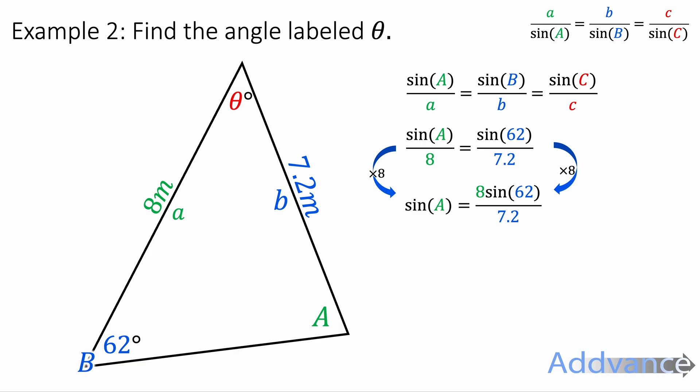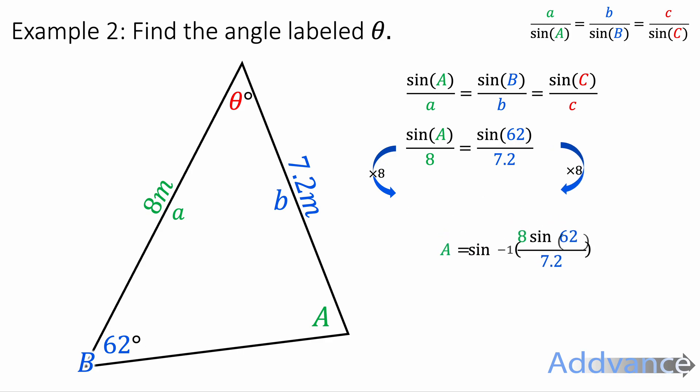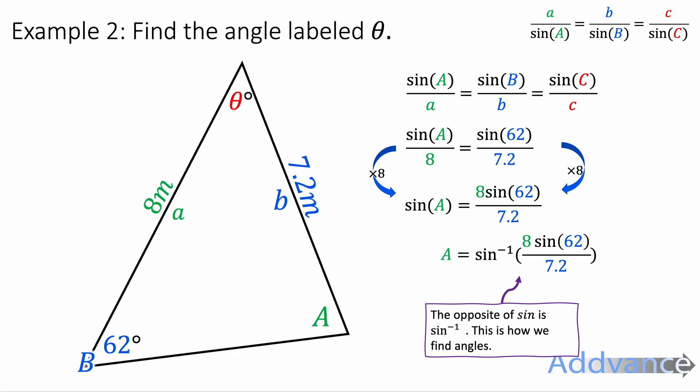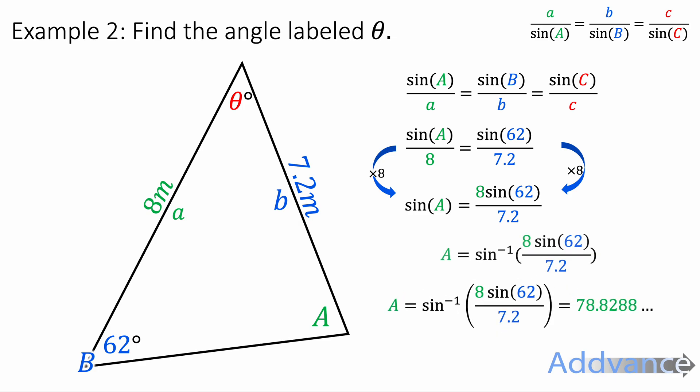Then we need to do the opposite of sine A. The opposite of sine of something is inverse sine. So A equals inverse sine of 8 times sine 62 over 7.2. We type that into the calculator — the opposite of sine is inverse sine — and we get 78.82 degrees.